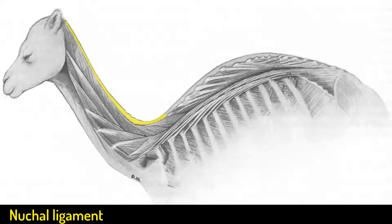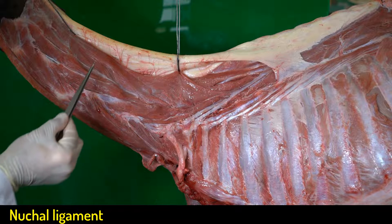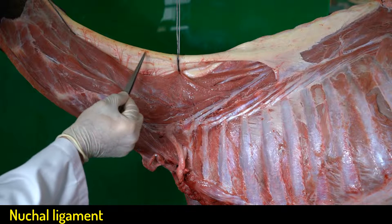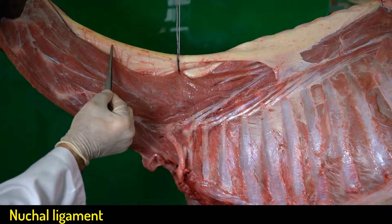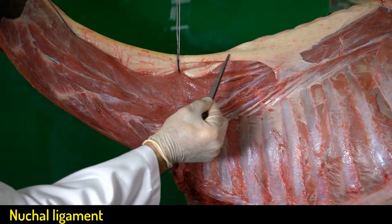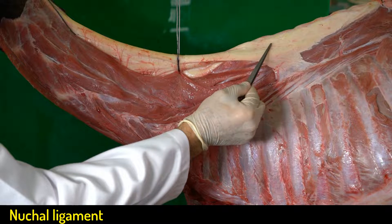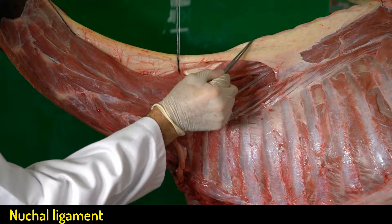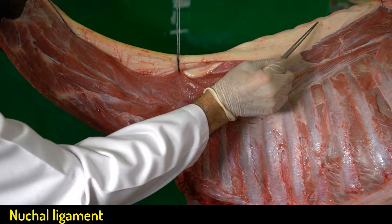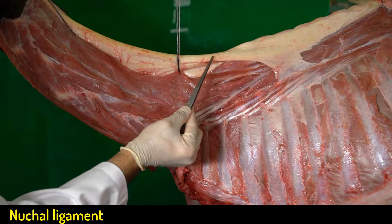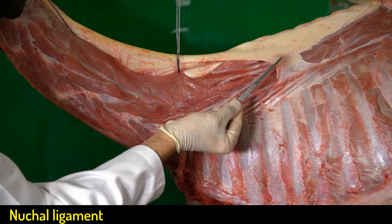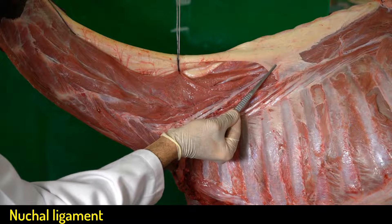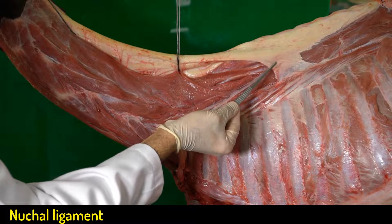Now let's look at the nuchal ligament, which is divided into two parts: the funicular and the lamellar parts. The funicular part, indicated here, becomes caudally continuous with the supraspinous ligament. The nuchal ligament forms caudally a blade-like sagittal portion as seen here.